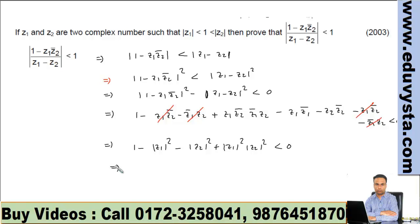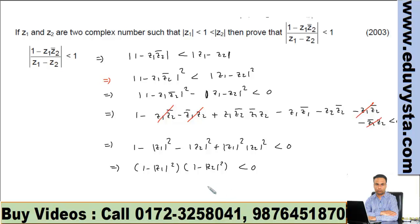After simplification, this reduces to mod z1 squared multiplied by (1 minus mod z2 squared), and this product must be less than 0.